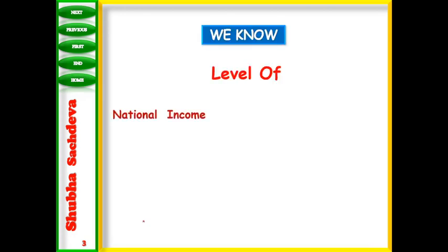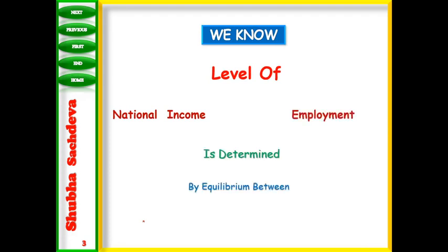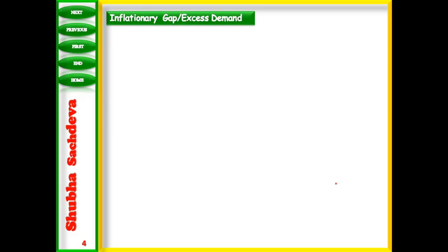We know that the equilibrium level of employment and national income is determined when aggregate demand equals aggregate supply, or when saving is equal to investment.